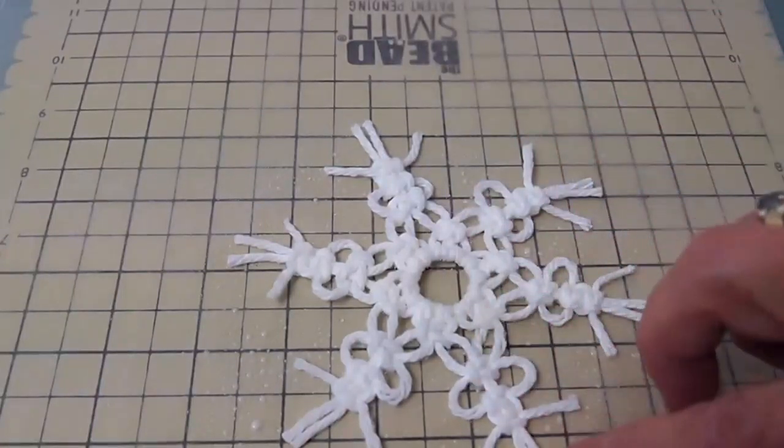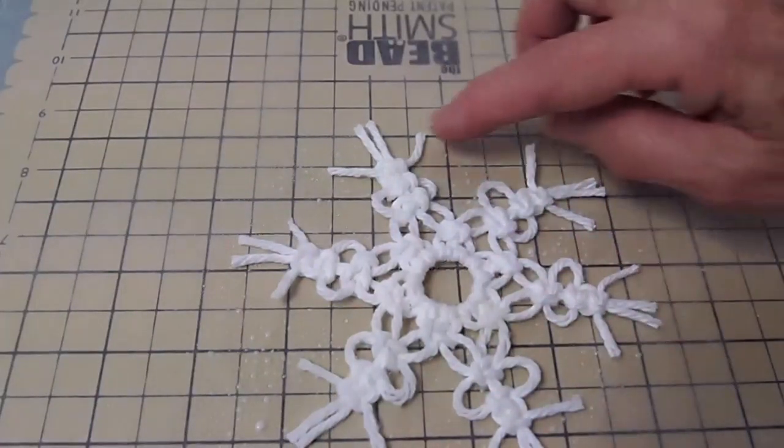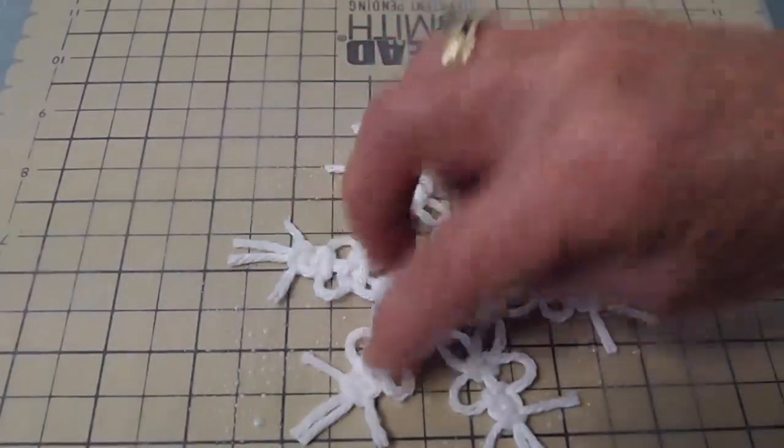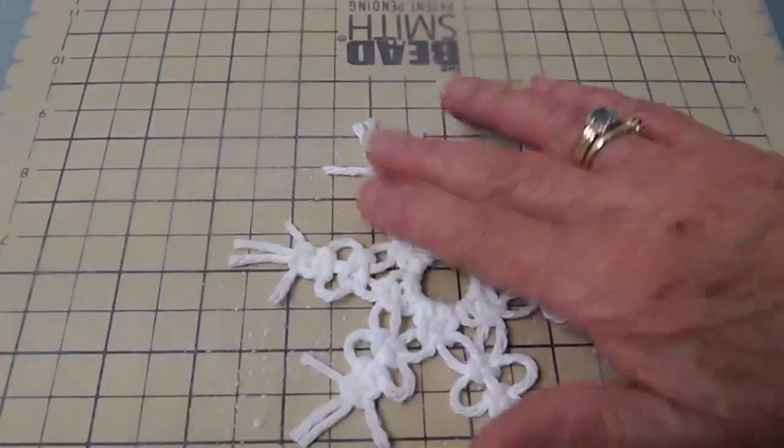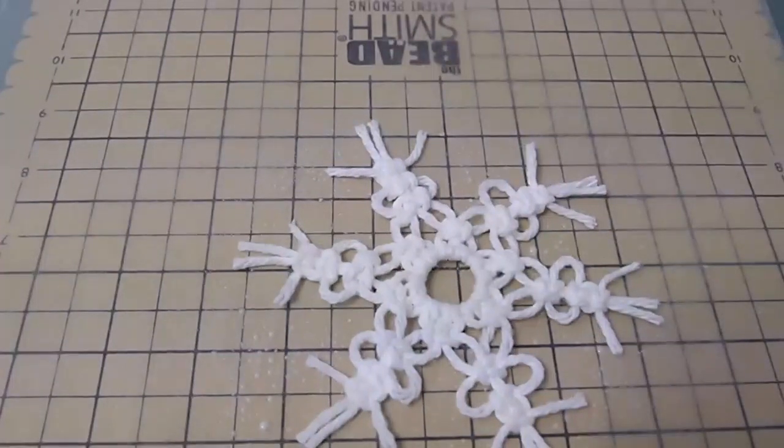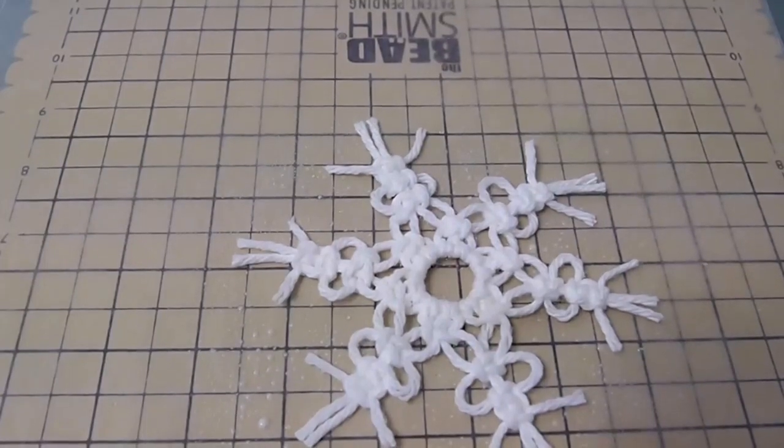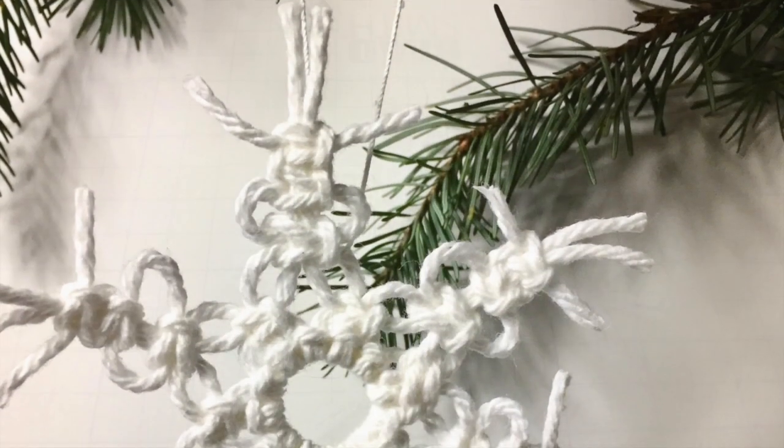You can hang it on your tree or you can hang it in your window. You can make several of these and create a garland. I just really like them, I think they're really cute. So spray it and then let it dry. I let mine dry overnight, but you may be able to get away with just doing it in the morning and having it dry later in the day, or you can speed it up with a hairdryer or something like that.